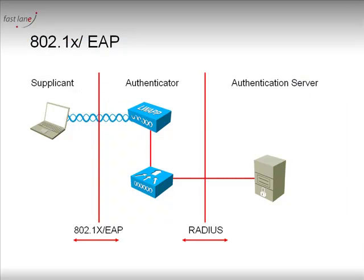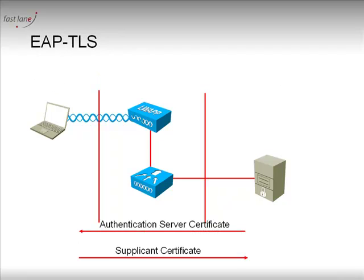As there are several flavors of 802.1x EAP, let's have a look at the two most classical ones. The first one is EAP-TLS. In EAP-TLS, which is very secure, the authentication server and the supplicant both use a certificate authentication method. When the EAP process starts — and again this is a simplified scenario — the server is going to send its certificate.